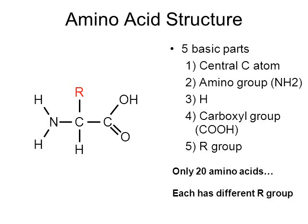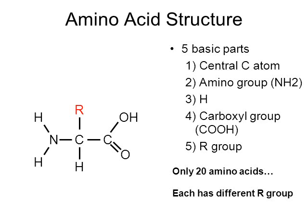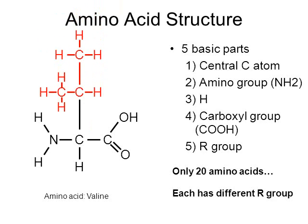Another amino acid called alanine has an R group consisting of a carbon and three hydrogens, but notice how everything else is the same compared to other amino acids. There's also an amino acid by the name of valine, whose R group is a little more complex. But the rest of the amino acid is unchanged — it still has the NH2 amino group and the COOH carboxyl group.